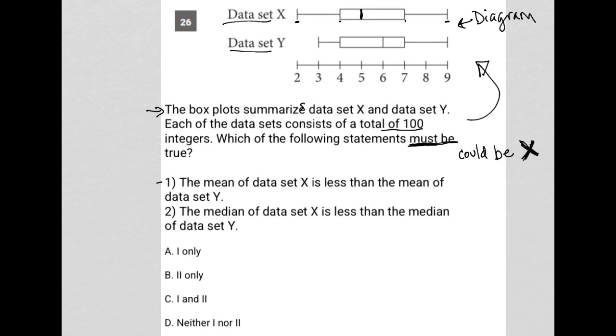So statement one: the mean of data set X is less than the mean of data set Y. Well, looking at the box plots, I don't know the mean value. There's nothing within a box plot that tells you what the mean is at all.